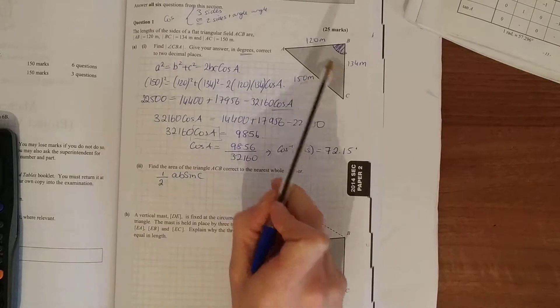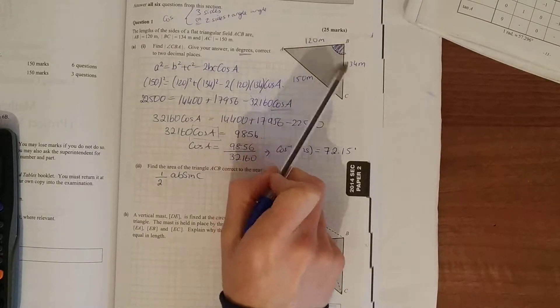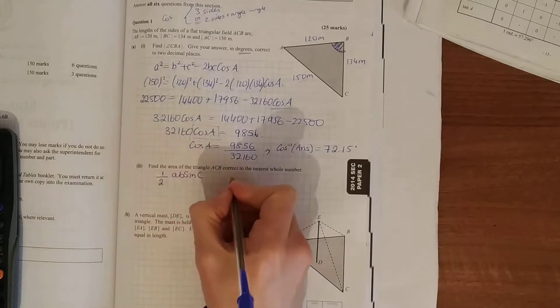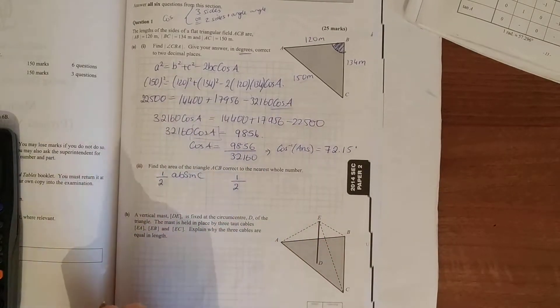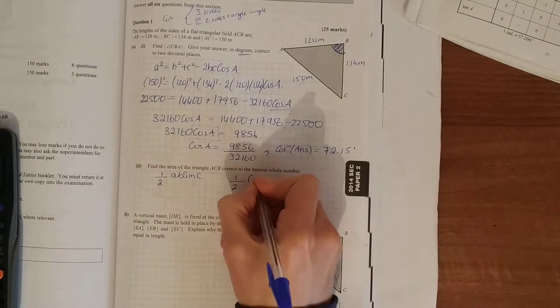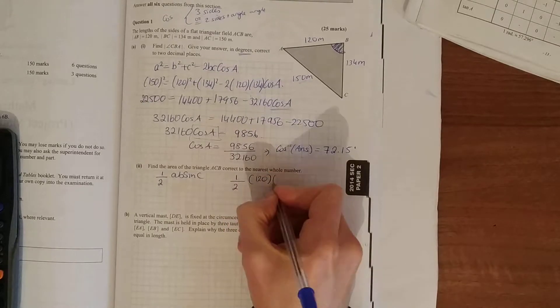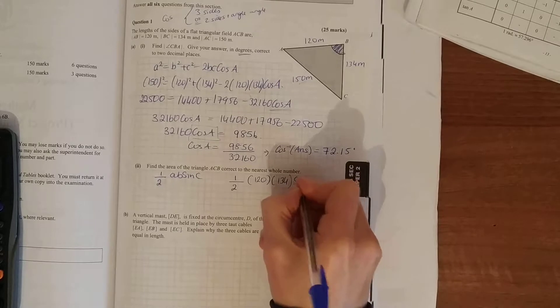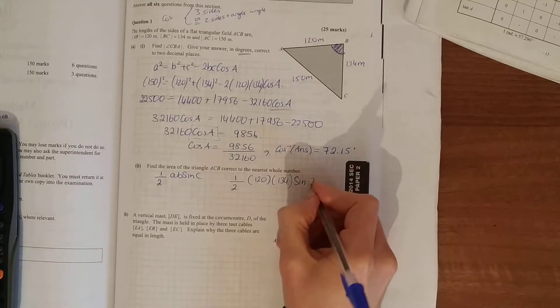What that means is half the product of any two sides times the sine of the included angle. Half the product of any two sides times the sine of the angle between them, which you just worked out.